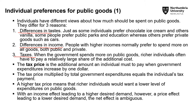We go back to the concept of the tax price. The tax price is the additional amount an individual must pay when government expenditures increase by one dollar. If we are providing more of a public good, it must be funded somehow, so certain individuals or all individuals have to be taxed more. This relates to the additional taxes that must be paid by the taxpayer to fund the increased provision of a public good.